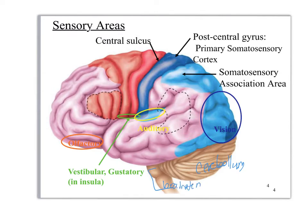So with the sensory areas, what you want to first notice is the central sulcus, which we looked at earlier when we were doing brain gross anatomy. The central sulcus is this cavern between the two gyrae. Now in red we have the precentral gyrus, and in blue we have the postcentral gyrus. With the postcentral gyrus, that's what you're looking for to get to the sensory sections of the cerebrum — the parts that specialize in sensory information.